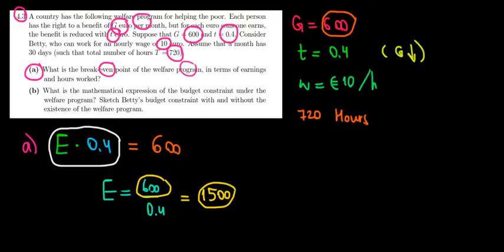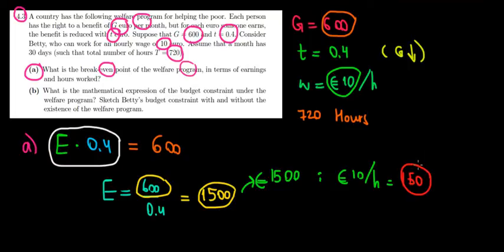What is 1500 euros in earnings? Well, if we earn 10 euros per hour, that means that we must work 1500 euros divided by 10 euros per hour. That's equal to 150 hours of work. So 150 hours of work. Hope this makes sense. In the next video, we go to part B.